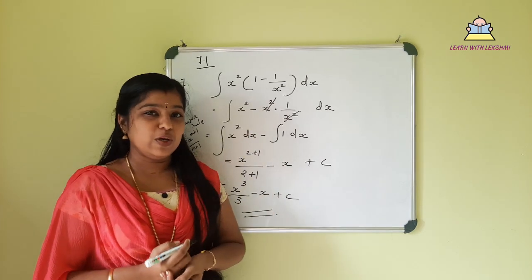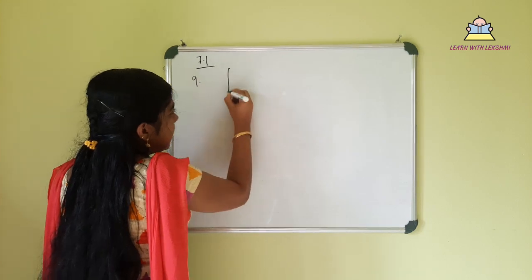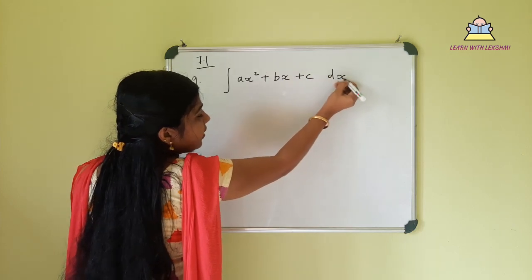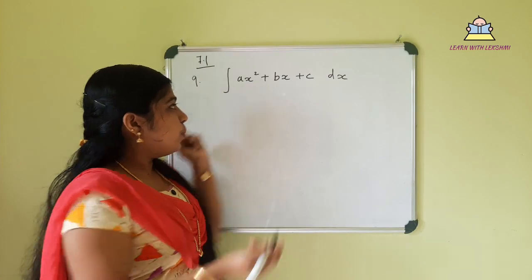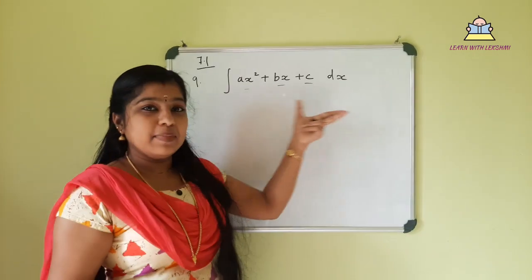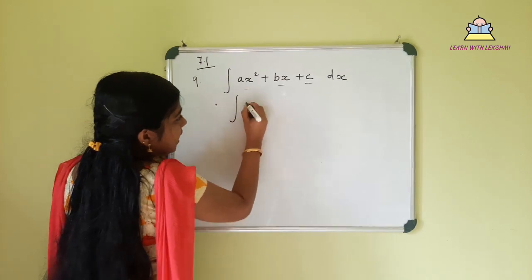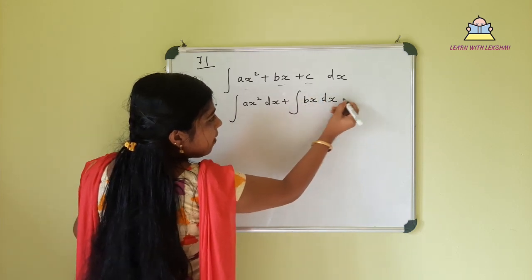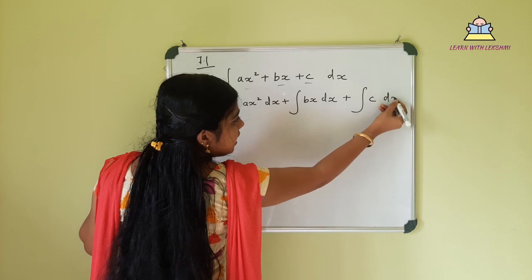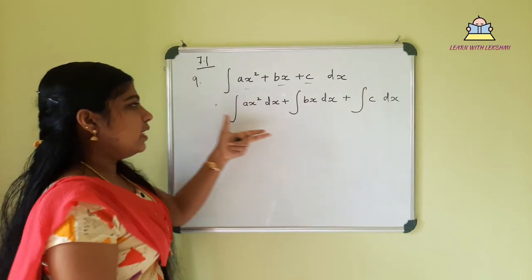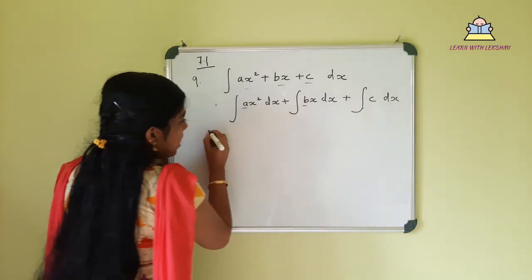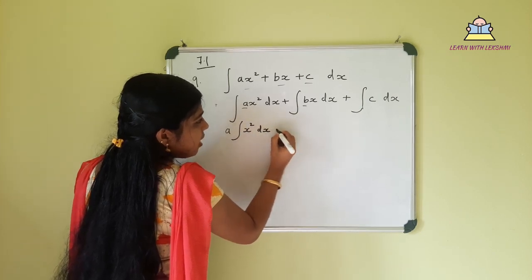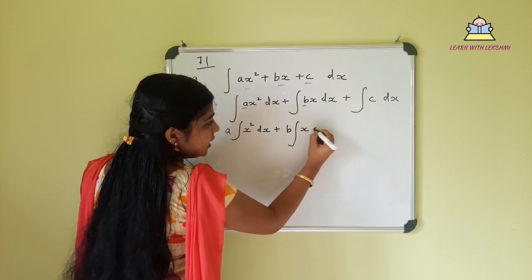Next, the 9th problem: integral of (ax squared plus bx plus c) dx. We separate the integral into three parts: integral of ax squared dx, plus integral of bx dx, plus integral of c dx.